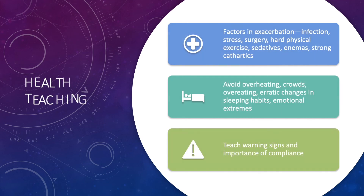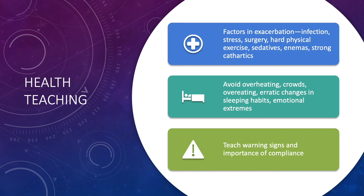Teach your patient and their families factors that increase the symptoms — that is, factors of exacerbation — which include infection, stress, surgery, hard physical exercise, sedatives, enemas, and other strong cathartics. The patient should avoid overheating, avoid crowds, avoid overeating, avoid erratic changes in sleeping habits, and try to avoid emotional extremes. The nurse should teach about warning signs associated with a crisis and the importance of compliance to the plan of care.